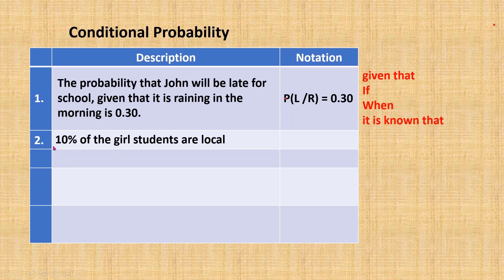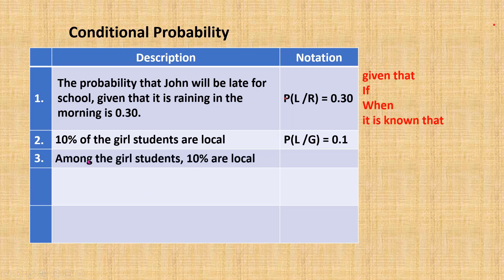Next example: 10% of the girl students are local. From this description, we already know the students are girls, and from the girl students, 10% are local. So this is the conditional probability P(L|G), where L stands for local student and G stands for girl. Comparing with example number 3 — 'among the girl students, 10% are local' — example 2 and example 3 are the same, since we already know the students are girls.